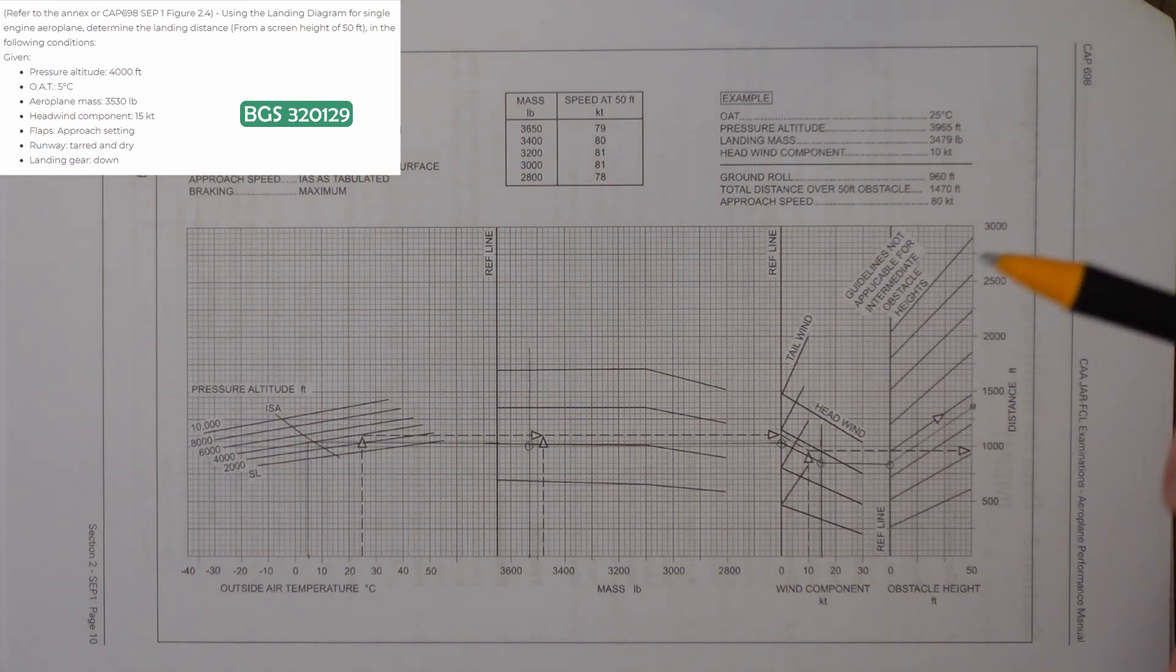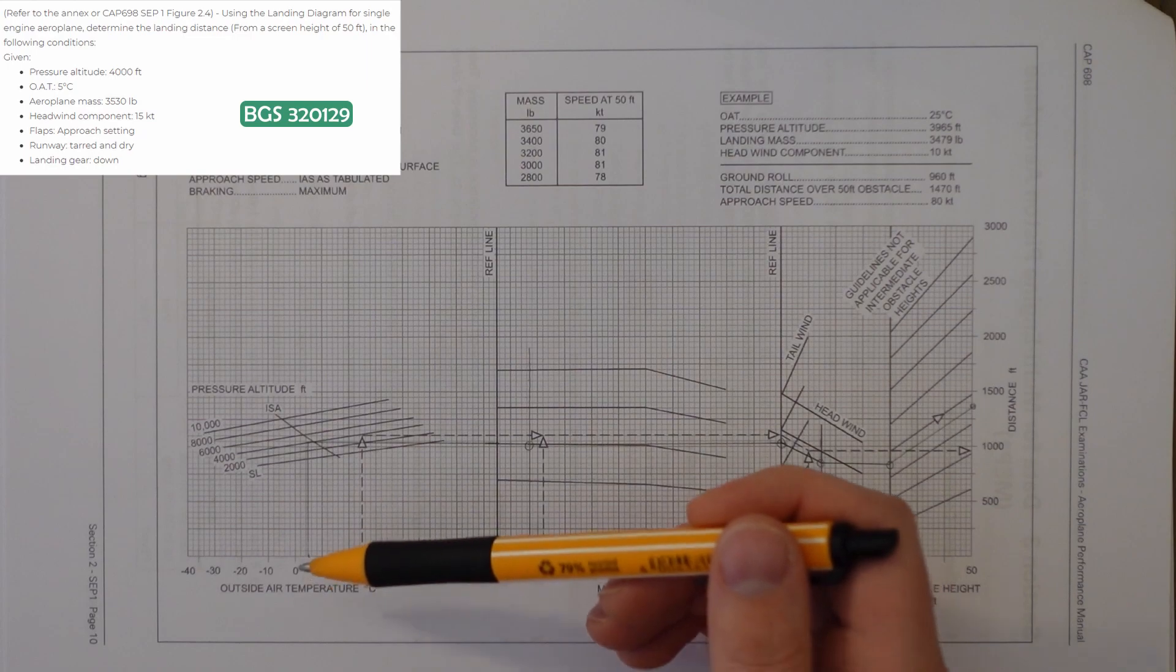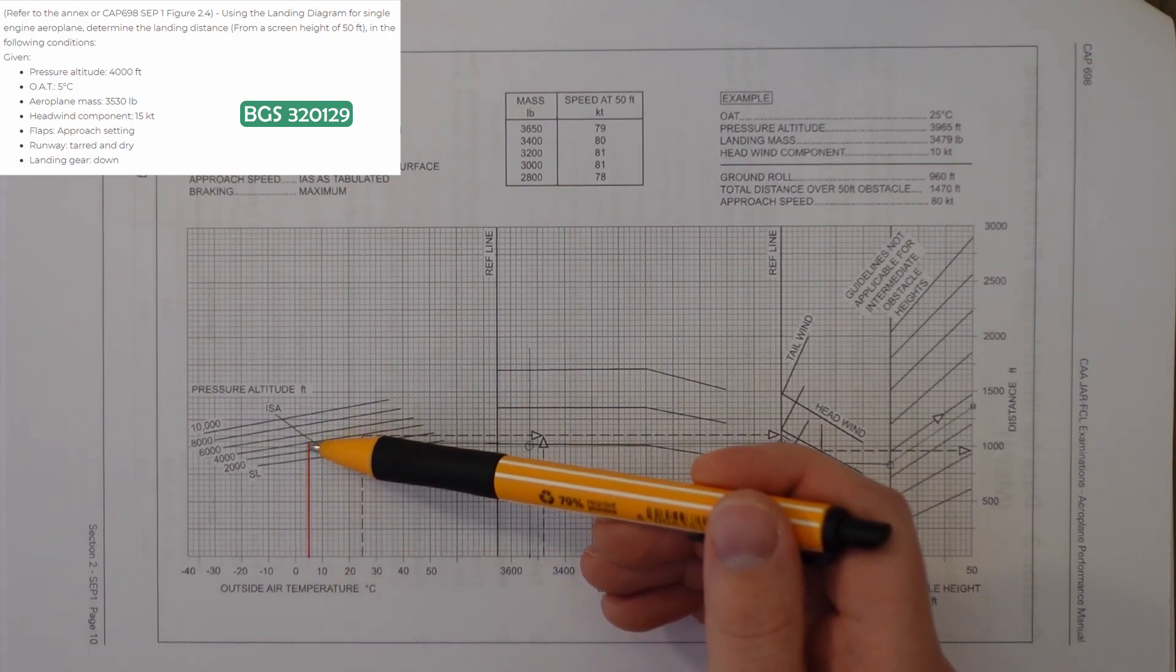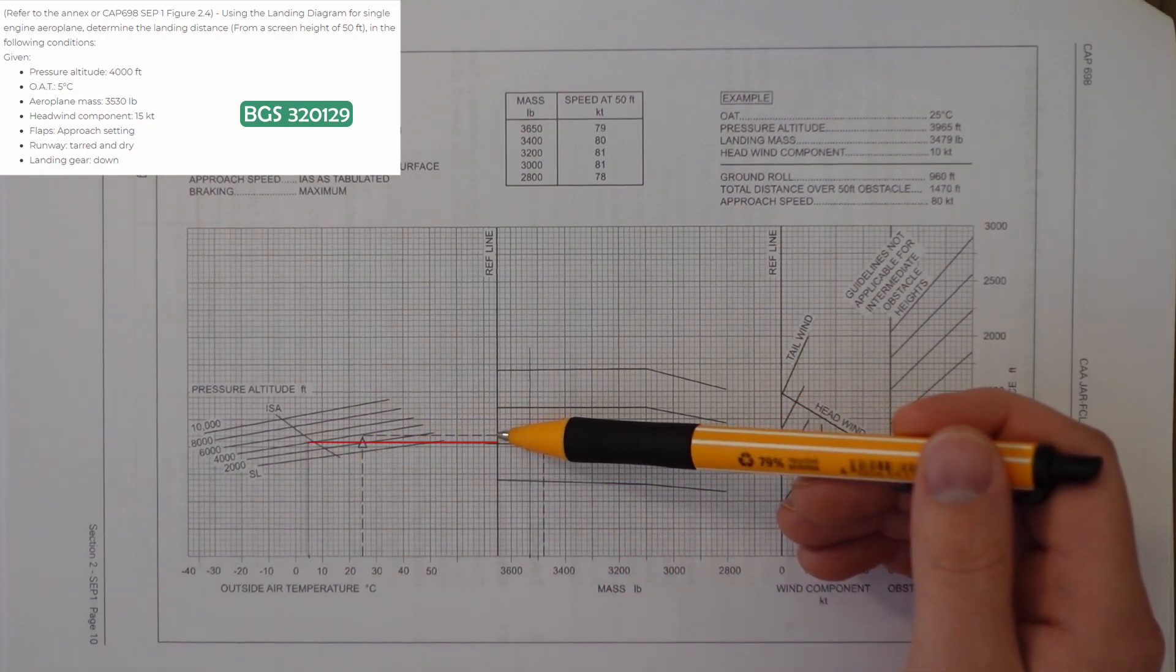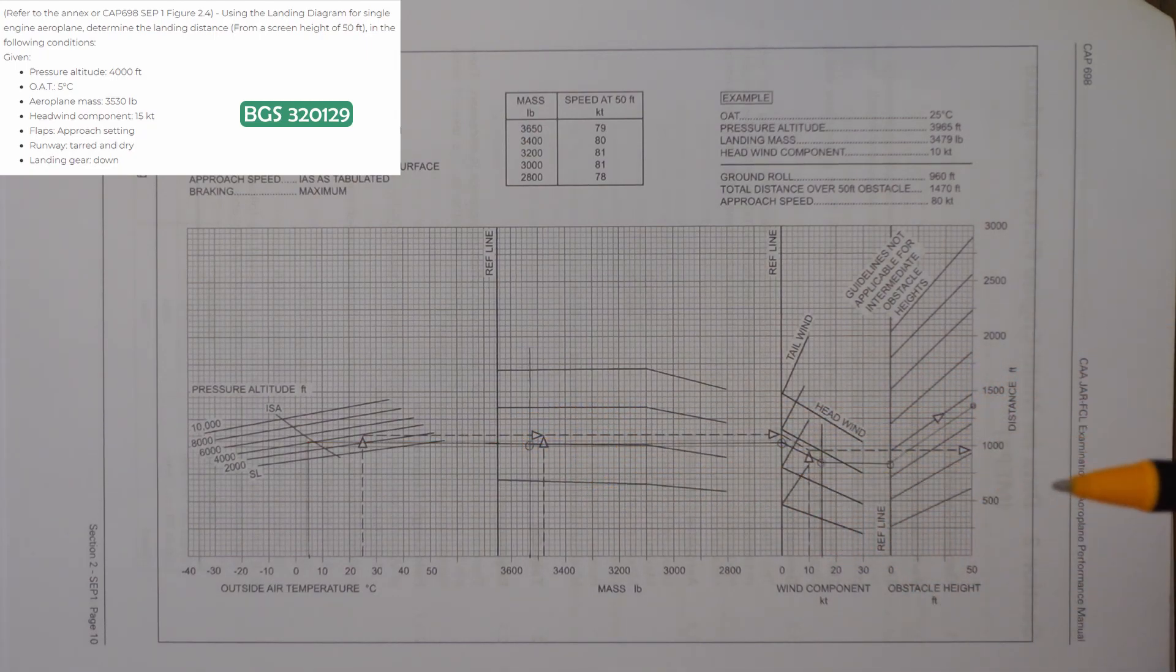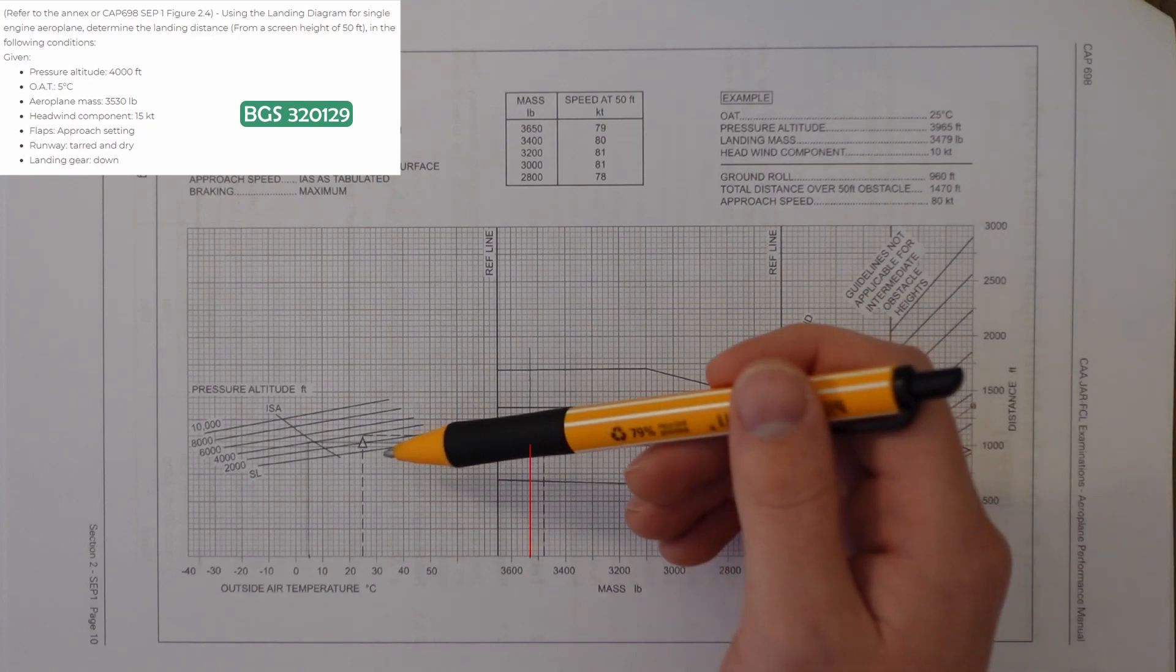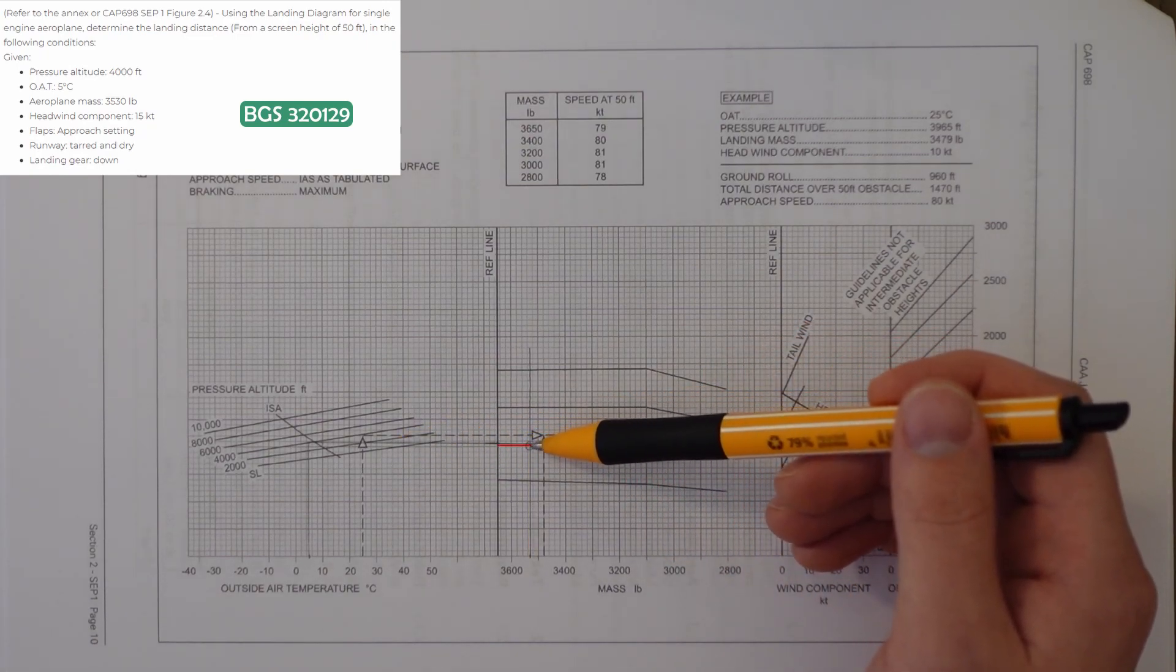So the first thing we do is we enter in the pressure altitude and the temperature. The temperature is 5 degrees and the pressure altitude is 4,000 feet. We go up to this line and then we follow it across to the reference line, which is exactly the same as the example does. From that point, we follow the guideline down to our weight. Our weight is 3,530 pounds, which is about here. So I've drawn a line up and followed the guideline down from the reference line to cross over at this point here.